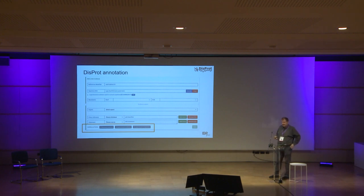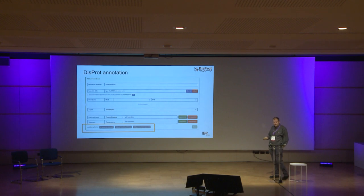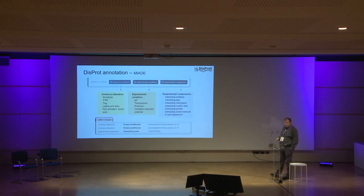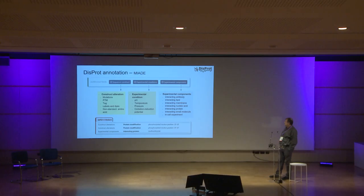Within the DisProt annotation — in the curator interface — we've added fields to capture MIADE information: sequence construct, experimental conditions, and experimental components. The sequence construct can contain various types of alterations including mutations, post-translational modifications, tags, labels and dyes, and non-standard amino acids, all captured in this first category of additional fields.